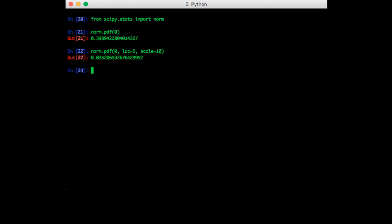So note that the scale parameter refers to the standard deviation and not the variance. So this is a standard deviation of 10, which corresponds to a variance of 100. And as expected, this has a much smaller probability density.